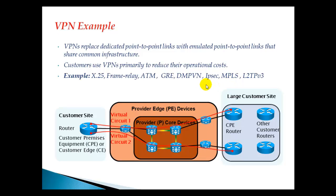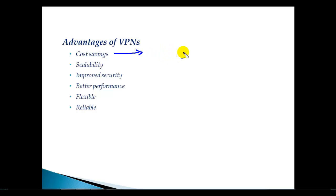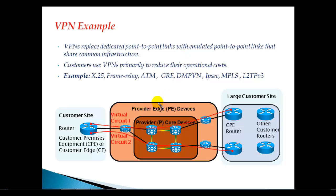Let's see the advantages of VPN implementations. The first thing is cost saving — replacing expensive leased line connections with a less expensive connection to a service provider through DSL or fiber, which are most commonly used for VPN implementations. It's also very scalable, because adding a new branch office is very fast and simple by just adding an additional link to the service provider. If you want to add new branch offices, you just connect your router to the nearest service provider router.